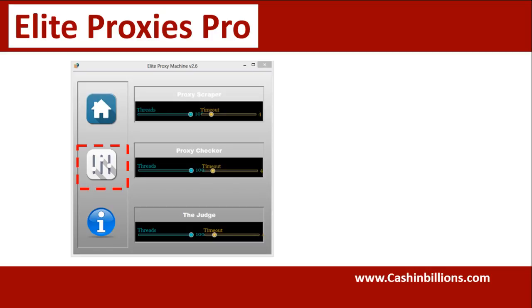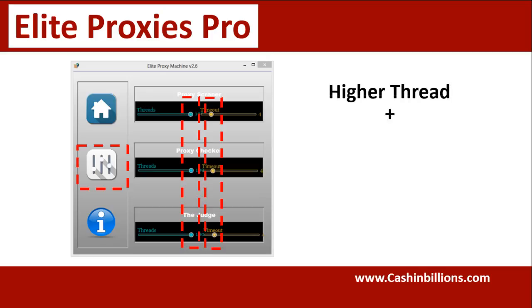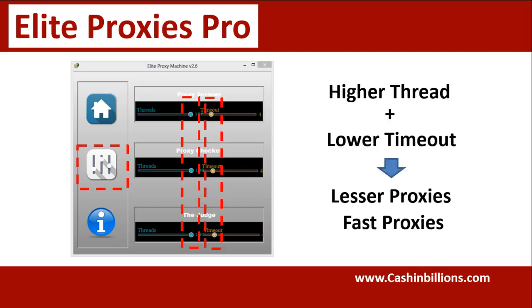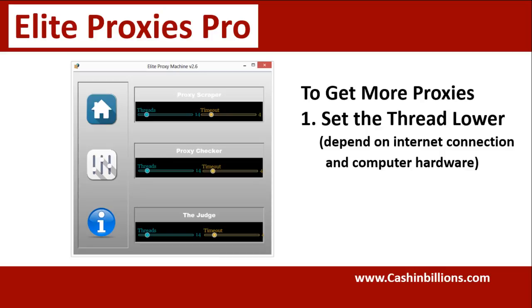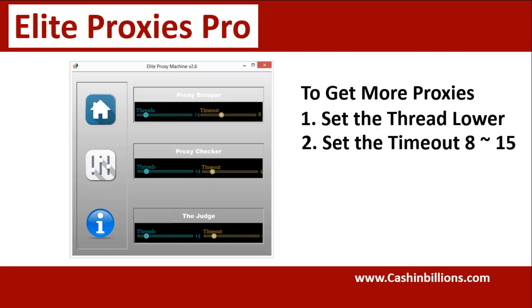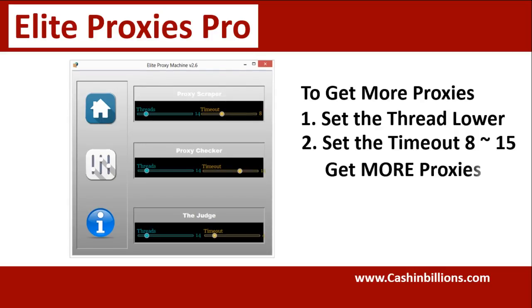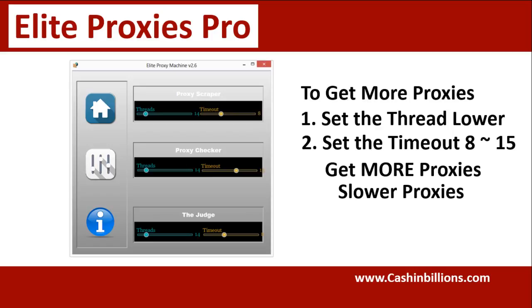Now here's the thing: the higher you have your threads and the lower you have your timeout, the fewer proxies you're going to get. However, the proxies that you do get will likely be extremely fast. To get the most proxies, you should set threads quite low. This also depends on your own internet connection and computer hardware. If you set your threads pretty low and your timeouts anywhere from eight to fifteen seconds, you're going to end up getting a lot more proxies.